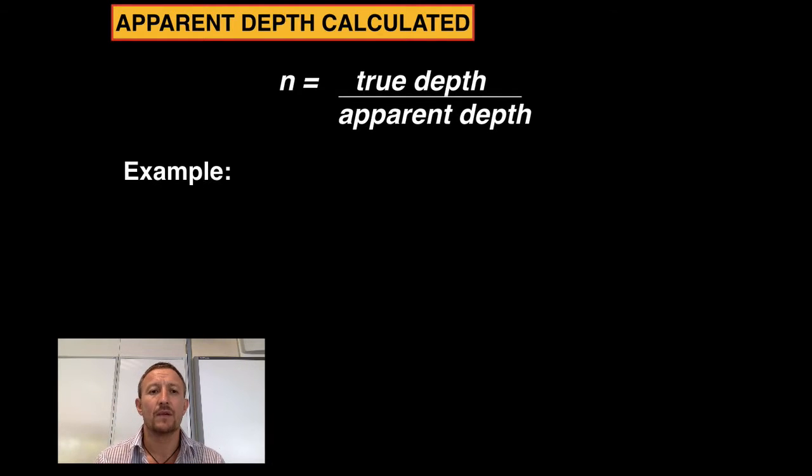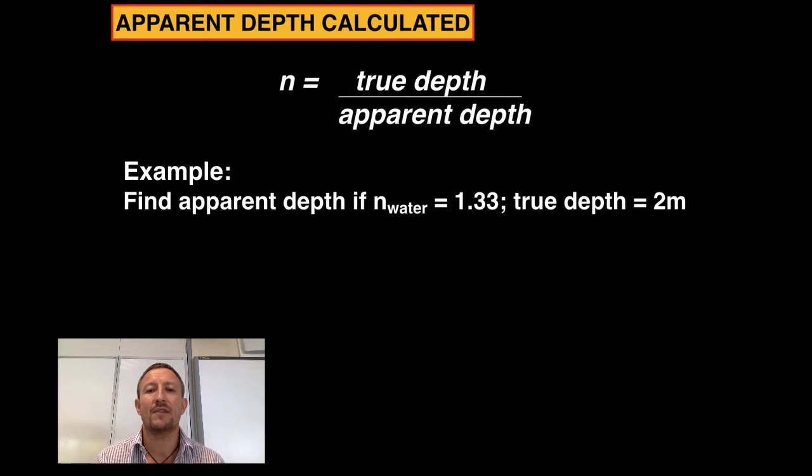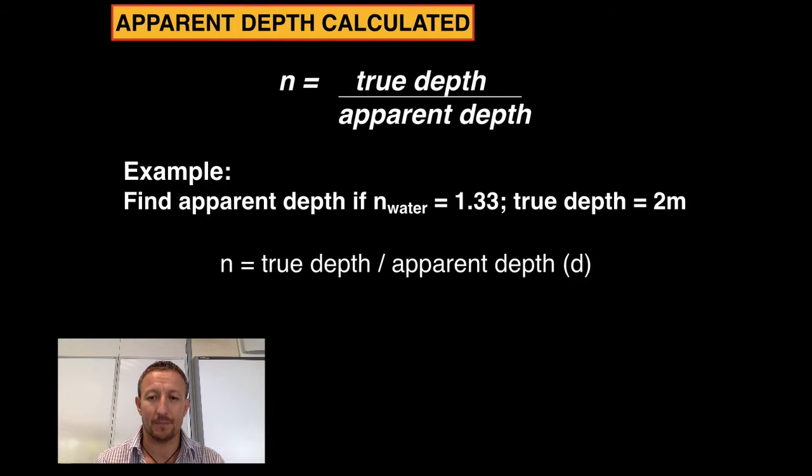Let's use an example. I've got to find the apparent depth in water which has a refractive index of 1.33 and the true depth of the object is two meters. It could be a coin sitting at the bottom of the pool two meters away. I use the formula n equals true depth over apparent depth, and I'm going to rearrange it so that I can find what the apparent depth is.